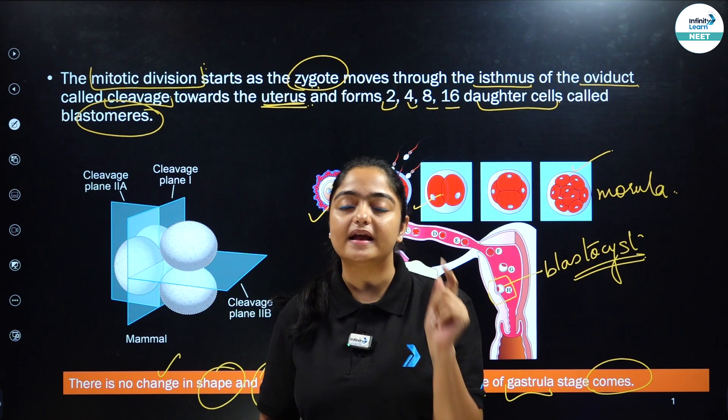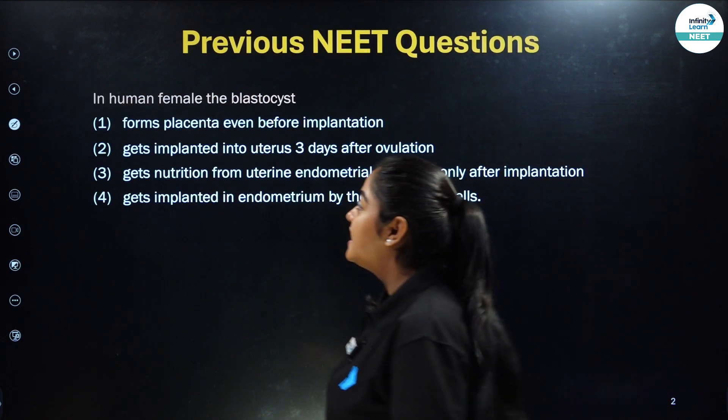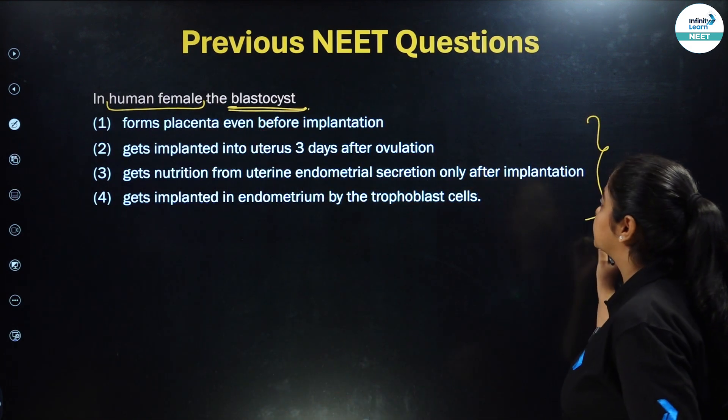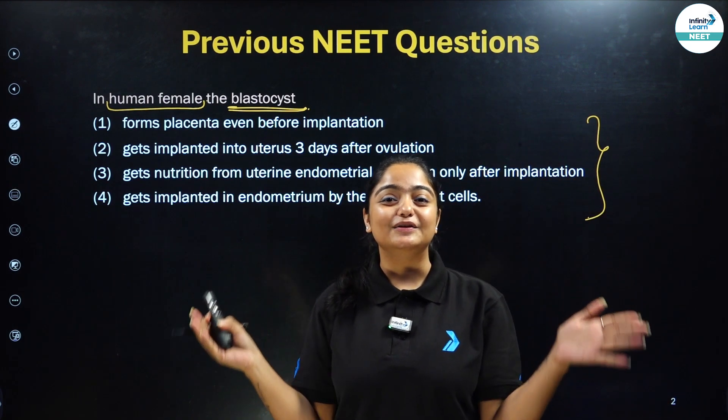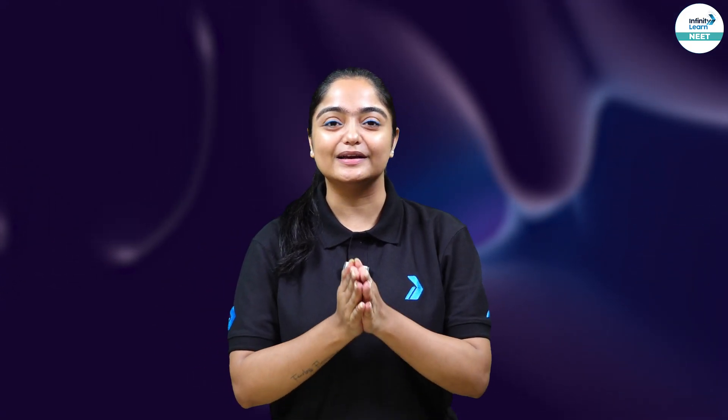Now that you've understood it so well, I'm sure you'll be able to answer this question: In human females, the blastocyst — you have four different options given here. I'm pretty sure you'll be able to answer, and I'll be waiting for your answers in the comment section. After such amazing animation and explanation, you should understand everything about embryonic development.